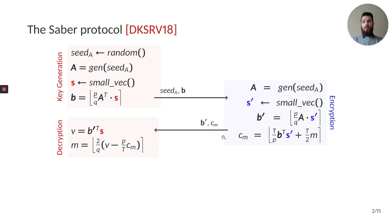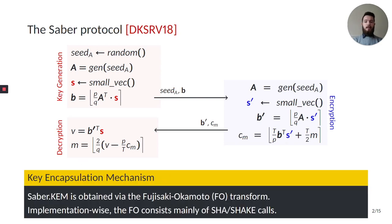During decryption, the first party computes the polynomial V, which is the product between B' given in the ciphertext and their secret S. Since the value of V is similar to the product of B times S', it is then possible to recompute the message M. To obtain the key encapsulation mechanism, we simply apply the Fujisaki-Okamoto transform to this protocol. From an implementation point of view, the Fujisaki-Okamoto transform mainly consists of calls to S' and SHAKE.